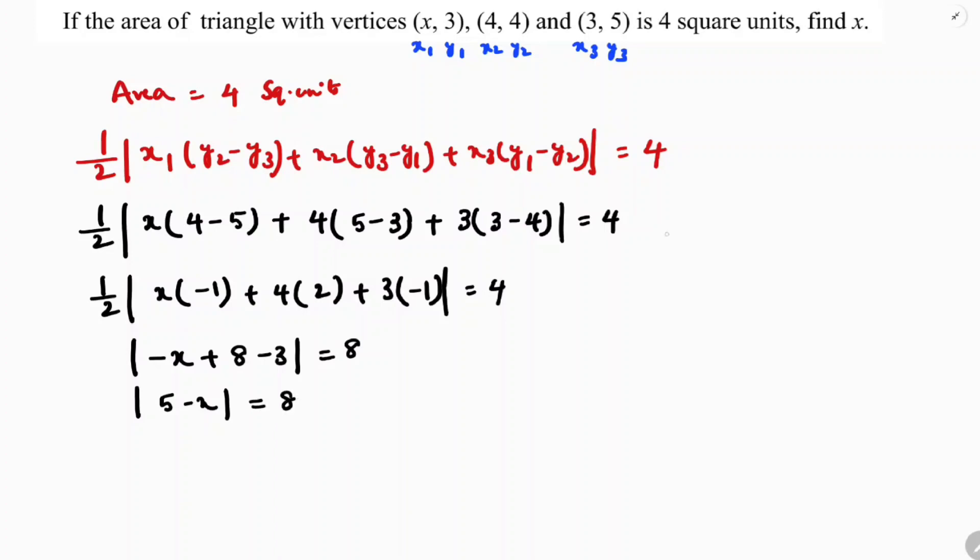Now taking out the modulus, since it's an absolute value, it can be positive or negative. So 5 - x equals plus or minus 8. You need to do both cases because the absolute value may be plus 8 or minus 8.